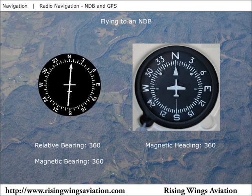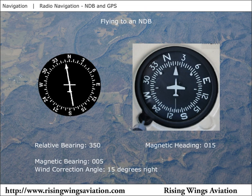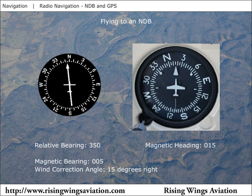For example, let's say the needle moves 5 degrees to the right. We must turn right to correct for this, so we turn 15 degrees to the right. Since the ADF needle always points directly at the station, it is now pointing 10 degrees to the left. The tricky part is to realize that we want the needle to show an angle equal to our wind correction. Since we turned 15 degrees to the right, the needle should show 15 degrees to the left of our nose. At the moment it shows 10 degrees left. Maintain this heading and watch the needle. If the needle continues to move to the right and now shows 5 degrees left of course, this is an indication that we are still drifting.